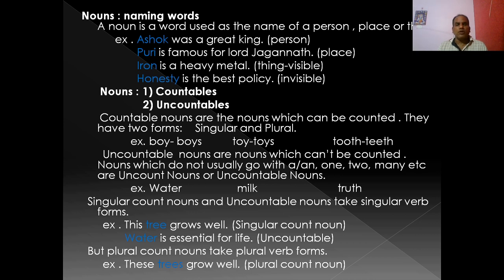Singular countable nouns and uncountable nouns take singular verb forms. For example: 'This tree grows well' — tree is a singular countable noun. 'Water is essential for life' — water is an uncountable noun, so it carries the singular verb 'is'. But plural countable nouns take plural verb forms. For example: 'These trees grow well' — trees is the plural countable noun, so the verb is 'grow', taking the plural verb form.